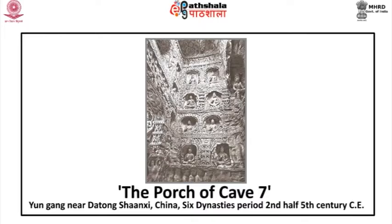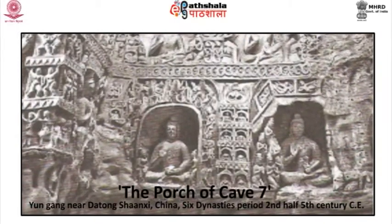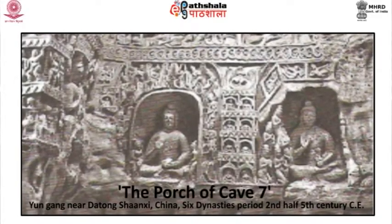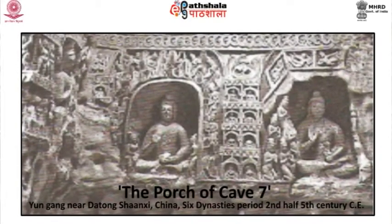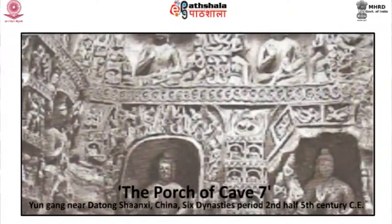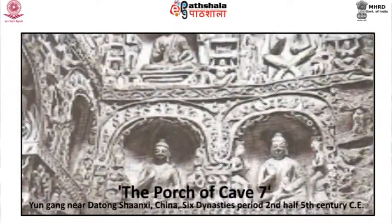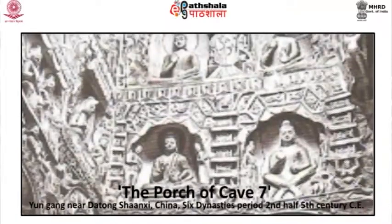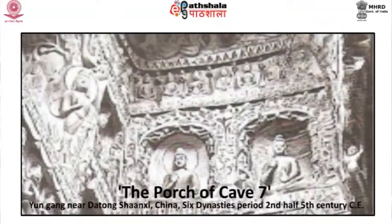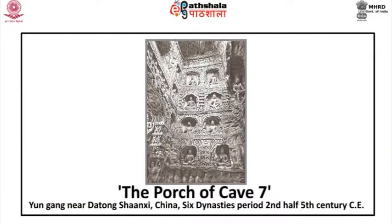The drapery is derived from the Bamiyan string pattern, and the face showing traces of Gandhara style gives the impression of a hybrid and stiff confirmation. The porch of Cave 7, Yungang, near Datong, Shanxi, China, belonging to the Six Dynasties period, second half of the fifth century CE, shows a typical Central Asian proliferation of images by simple addition without much symmetry. Above, one finds a carefully worked-out order in the lower frieze and a symmetrically balanced mixture.